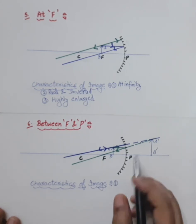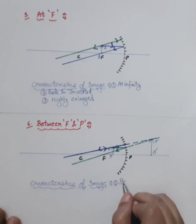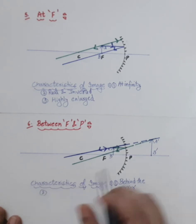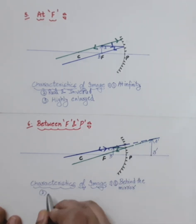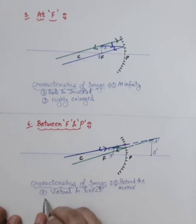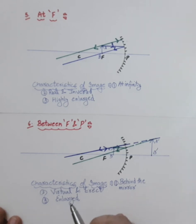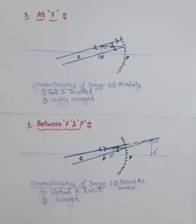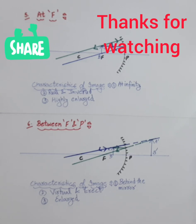The image is formed behind the mirror. Since it is formed by virtual intersection of the rays (dotted lines), it is virtual and erect. The size is enlarged. In summary, out of all six positions, only this last one — object between F and P — gives a virtual and erect image. All other positions give real and inverted images. Practice all these ray diagrams. The next video will cover image formation for a convex mirror. Thanks for watching!